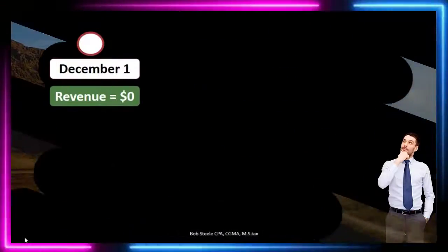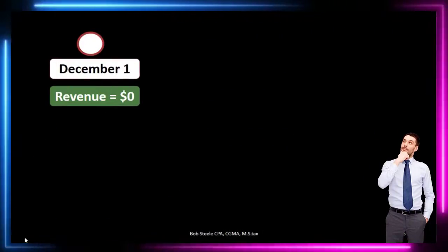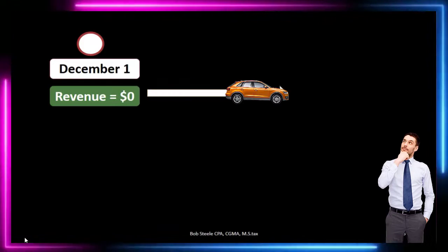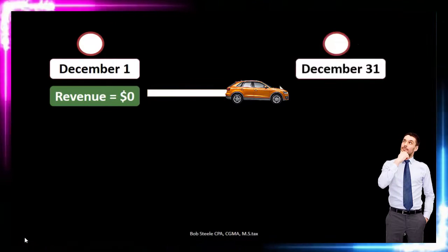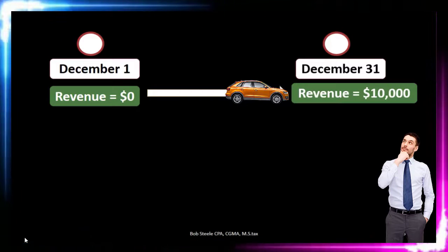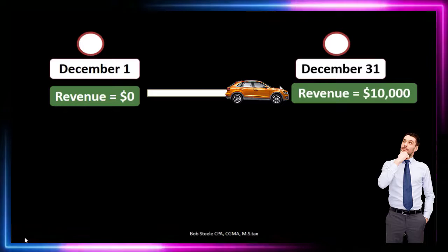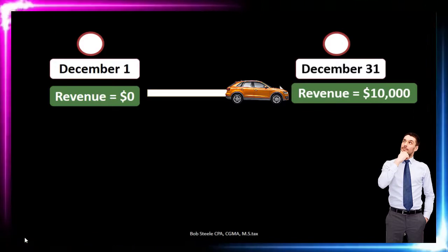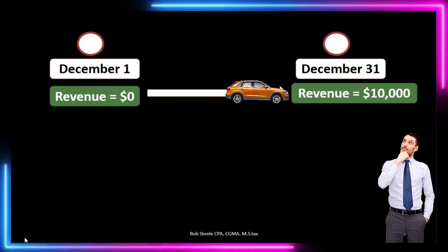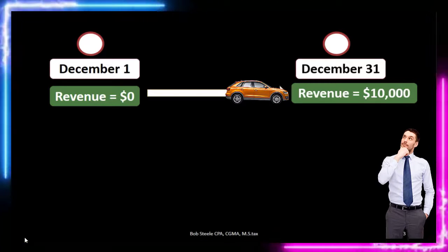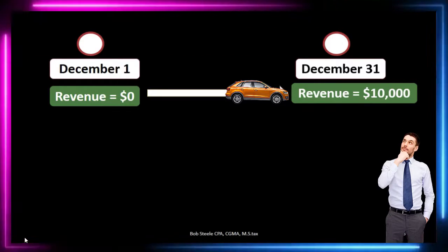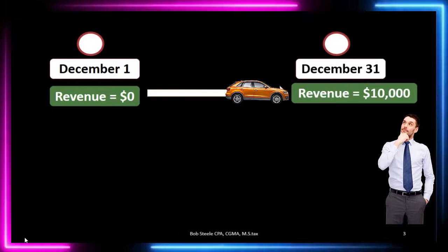What you would do is probably set the odometer to zero and then drive for a month and see how many miles you drive. That's what we're going to do with the income statement. As of December 1st, we have revenue of zero. As we drive through the month, we have revenue that then ends at the end of the month, December 31st, at $10,100. You might ask: does that mean we didn't make any money in November? It's not necessarily the first year of operations — it means that as of the end of November, we reset the odometer.